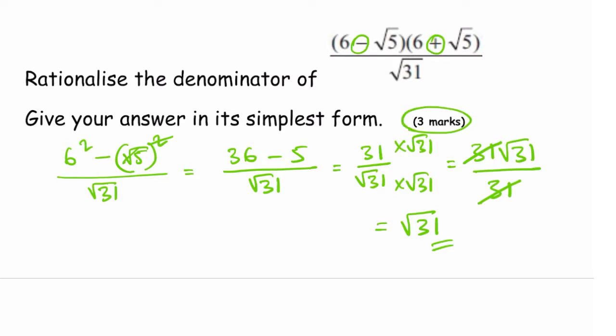You can answer this question by expanding double brackets as well—multiplying 6 by 6 and root 5 by 6 and root 5—and that will simplify to 36 minus 5, which is just 31.